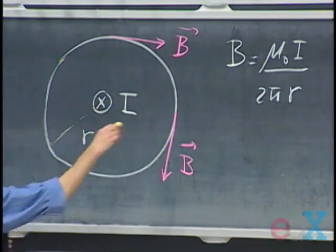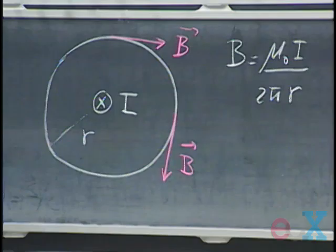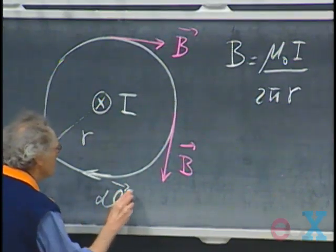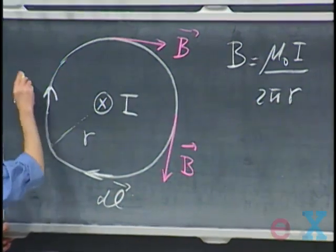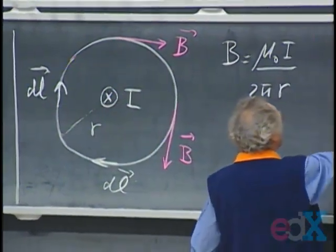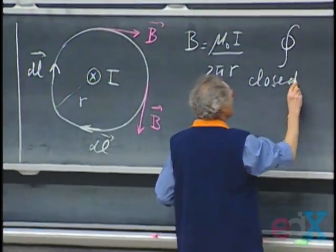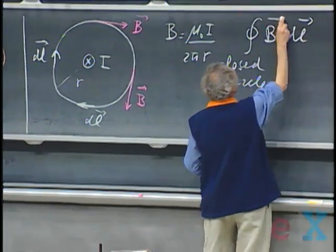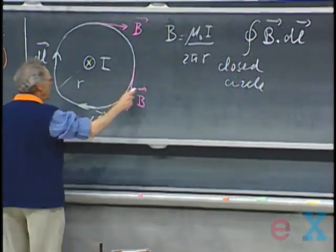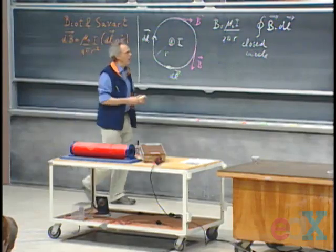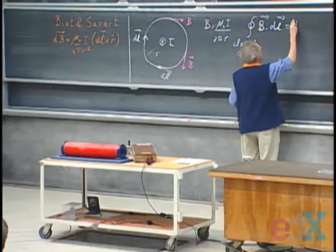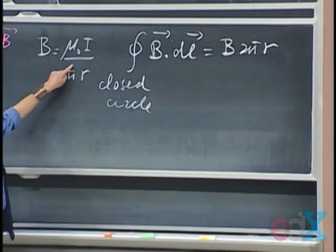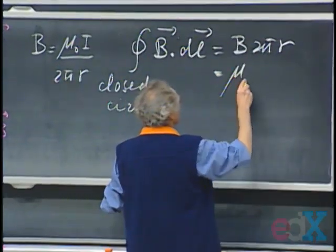If you walk around this circle, carving it up into little elements DL, and you calculate the closed circle integral of B dot DL, then everywhere locally B and DL are in exactly the same direction. You find that this is B times 2πR, which equals μ₀ times I.